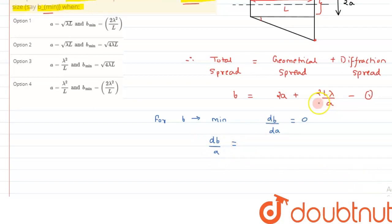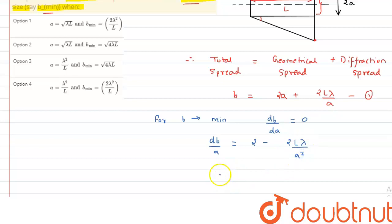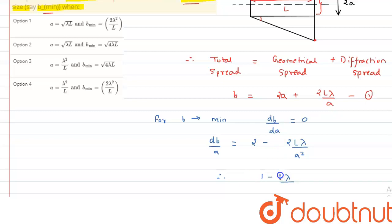We can write db upon da equals the derivative of 2a plus 2L lambda upon a. The derivative of 2a is 2, and the derivative of 2L lambda upon a gives minus 2L lambda upon a squared. Taking 2 as common, we are left with 1 minus L lambda upon a squared equals zero.